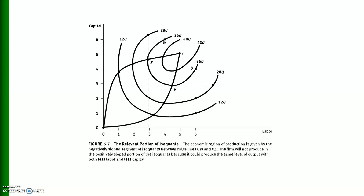In this diagram, isoquants are segregated by drawing ridge lines — one upper ridge line and one lower ridge line. The area between the two ridge lines is the economic region, and production will take place in this region. Beyond the ridge lines, the slopes of the isoquants become positive, which violates the characteristics of isoquants, so production occurs only in stage two for both inputs.